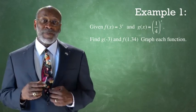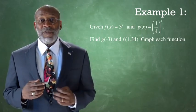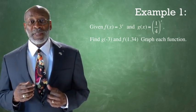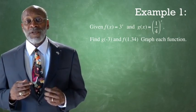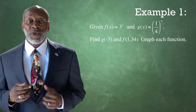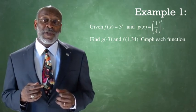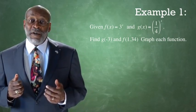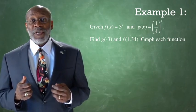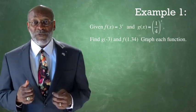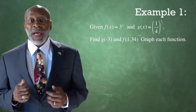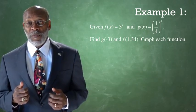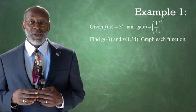Example 1. Given that f of x equals 3 raised to the power x, and g of x equals 1 fourth raised to the power x, find g of negative 3 and f of 1.34, and graph each function.